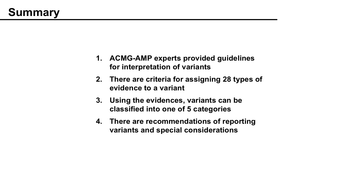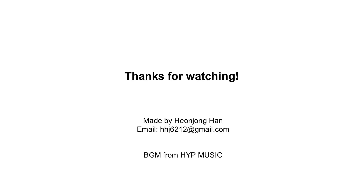To sum up: 1. ACMG/AMP experts provided guidelines for interpretation of variants. 2. There are criteria for assigning 28 types of evidence to a variant. 3. Using the evidence, variants can be classified into one of five categories. 4. There are recommendations for reporting variants and special considerations. There are actually plenty of details that I missed from the paper, as this is a short summary. I recommend you to read the original paper. Thanks for watching this video.